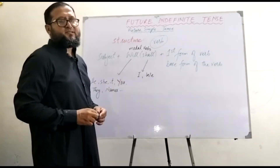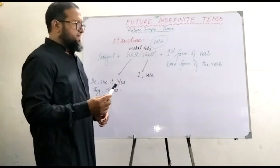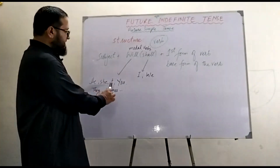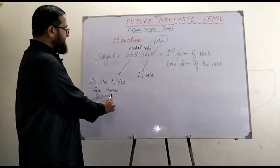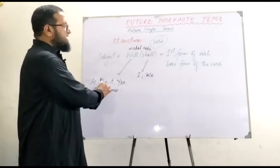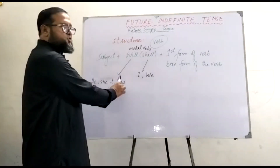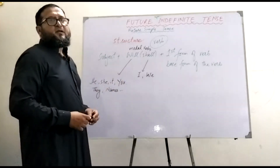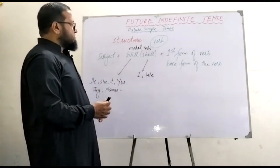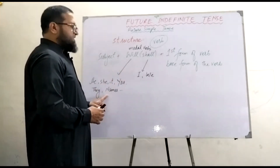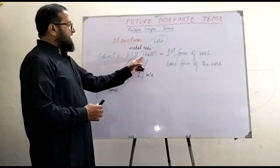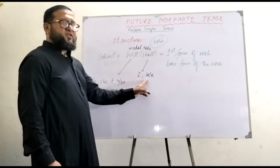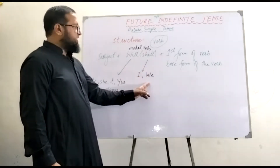However, for classification and understanding, you must remember that will is used with he, she, it, you, and they — for example, Aria will, Jack will, Ahmed will. Shall is used with I or we — so I shall, we shall.